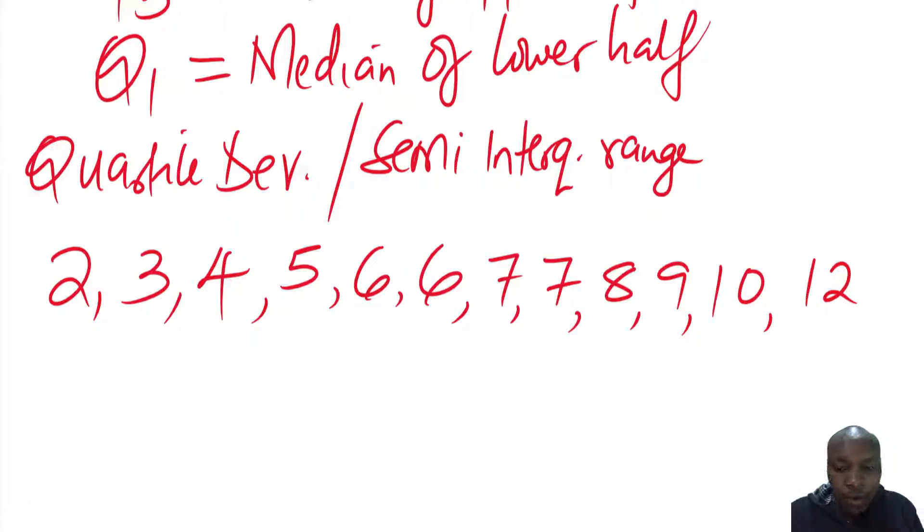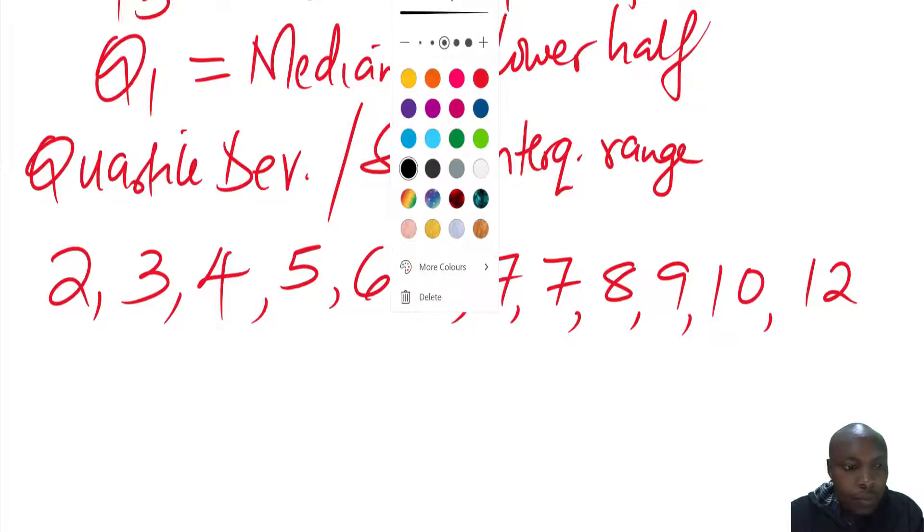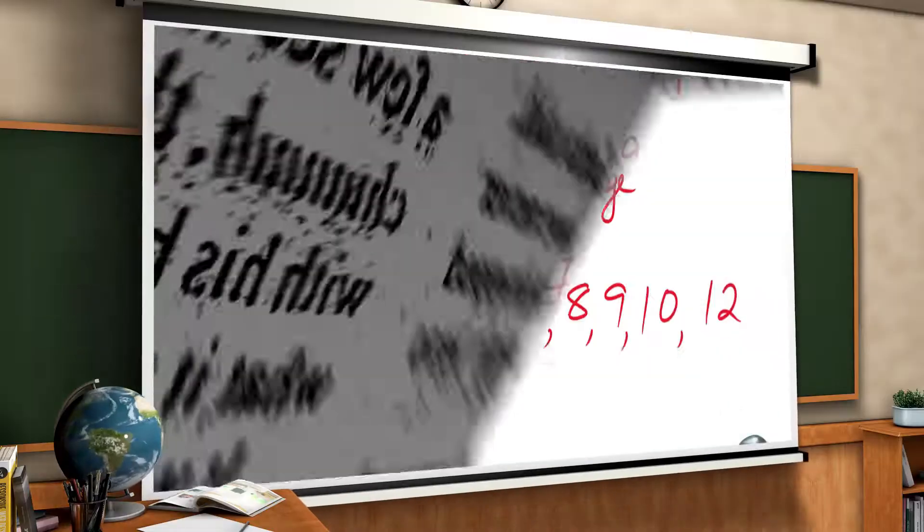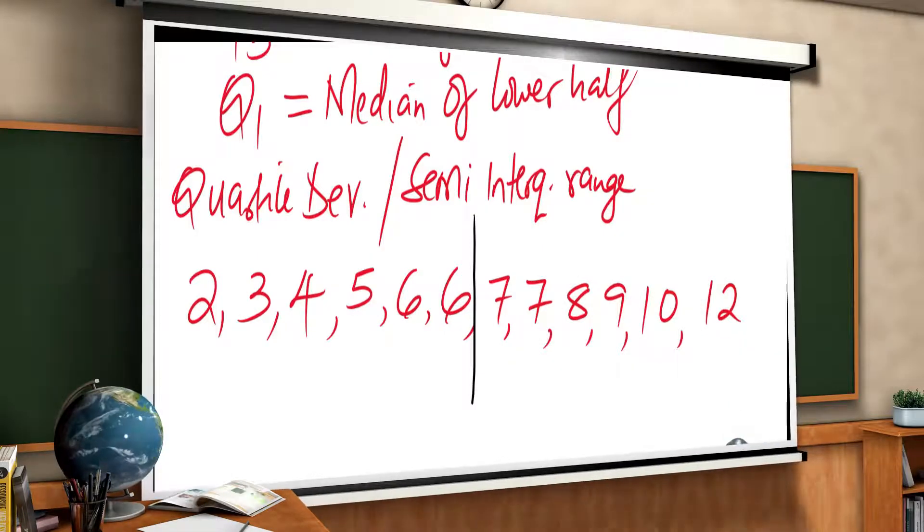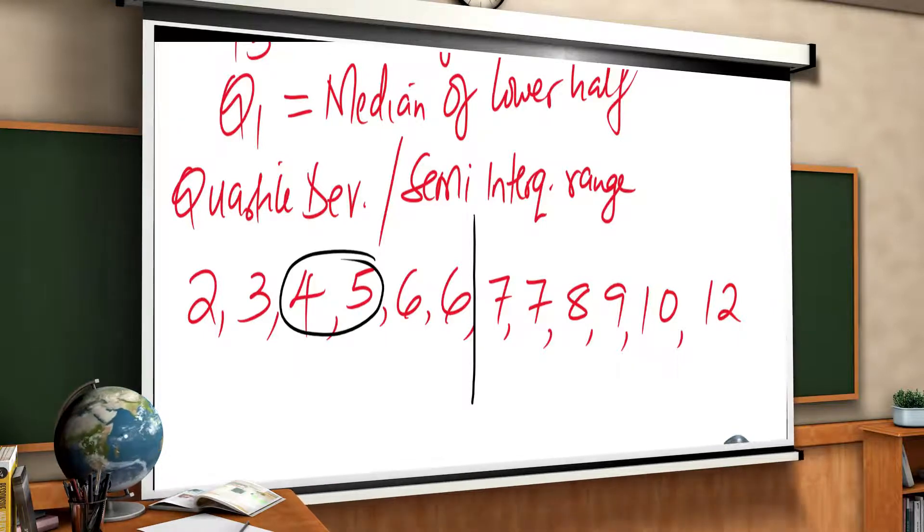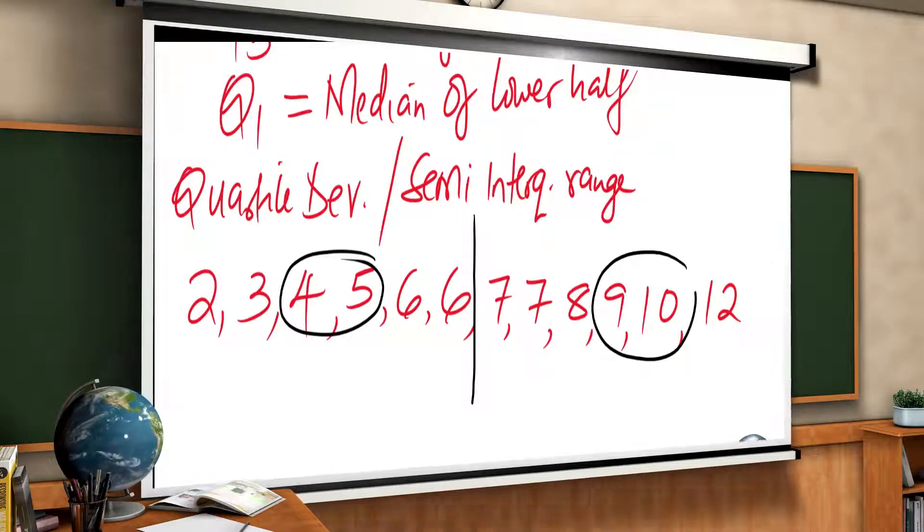So I will divide it within these. So let me divide it at this level. So when you look at both sides, we have 6 values. So the median of this lower half, and then this will be the median of the upper half.